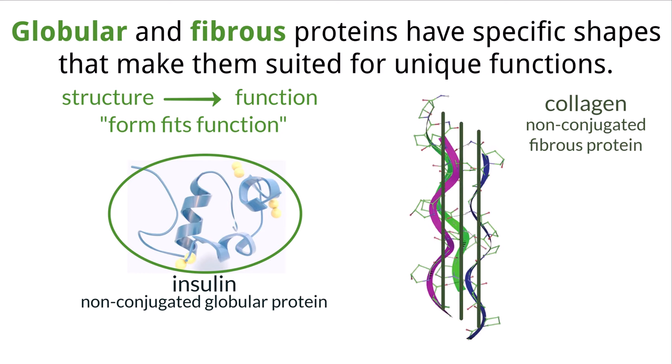For collagen, that involves three protein chains wound together into a helix, which is different from the alpha helix secondary structure we discussed earlier. This long chain form gives the protein a high amount of tensile strength, which is why it is used for structural support within many cells and tissues in the body.